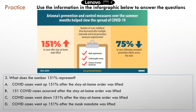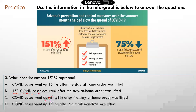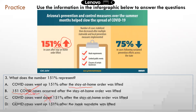Question three: what does the number 151% represent? Is it because cases went down? No — the arrow is pointing up, so C is not correct. Is it the absolute number of cases? No — there's a percentage sign, so 151 COVID cases is not right. Now A and D are similar, so let's look at the second half: COVID cases went up 151% after the stay-at-home order was lifted, or after the mask mandate was lifted. You can see it says after the stay-at-home order was lifted. So the correct answer is A.